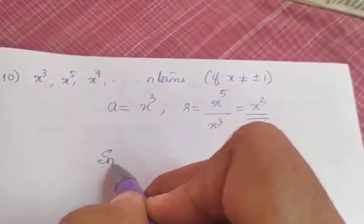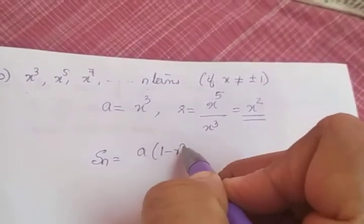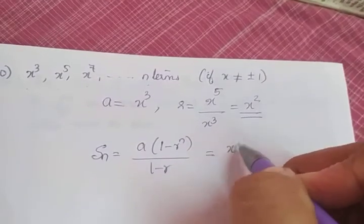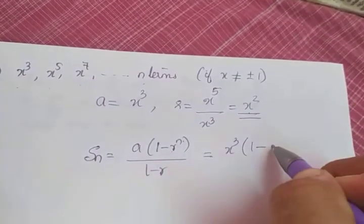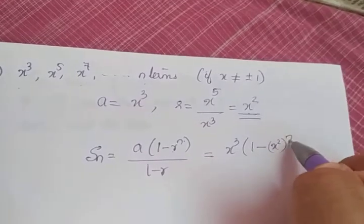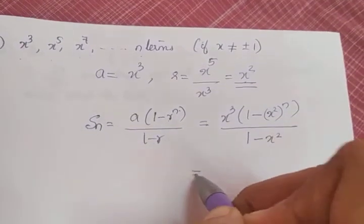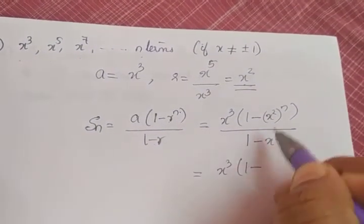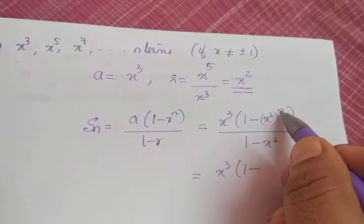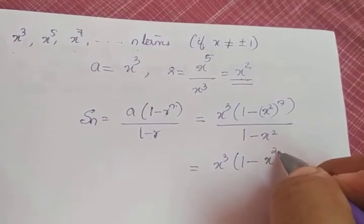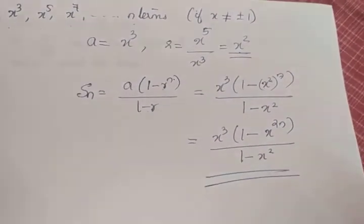Sn is equal to a(1 - rⁿ) / (1 - r), which is equal to x³ × (1 - (x²)ⁿ) divided by (1 - x²). That is x³ × (1 - x²ⁿ) — when two powers are there we can multiply the powers, giving x raised to 2n — so 1 - x²ⁿ, whole divided by (1 - x²).